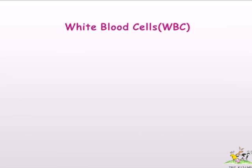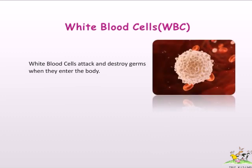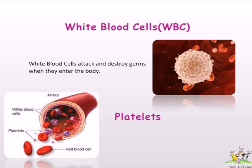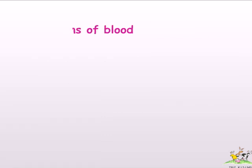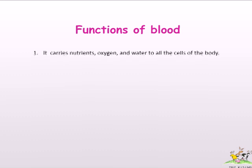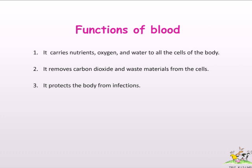White blood cells (WBC) attack and destroy germs when they enter the body. Platelets are blood cells that help stop bleeding by forming a clot at the place of the wound. Functions of blood: it carries nutrients, oxygen, and water to all the cells of the body; it removes carbon dioxide and waste materials from the cells; it protects the body from infections; and it keeps the body at a uniform temperature.